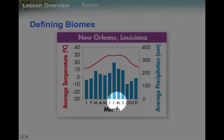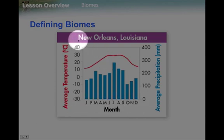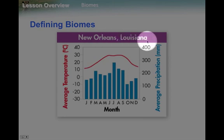If you look at the time span, it's months — January through December. All the months are represented. We're talking about New Orleans, Louisiana. Why do we say temperate? Well, temperate tells us that there are different seasons.